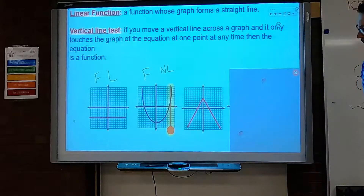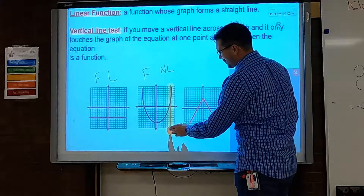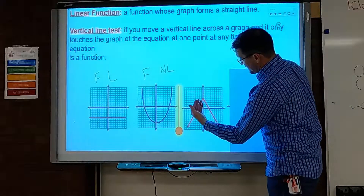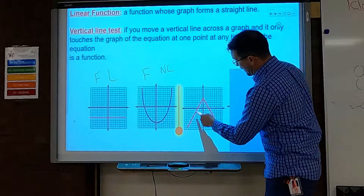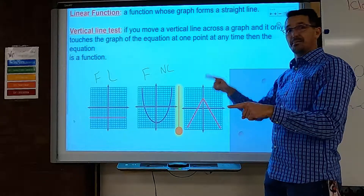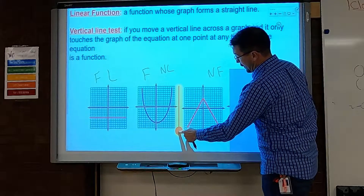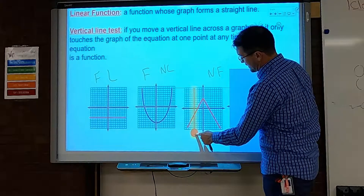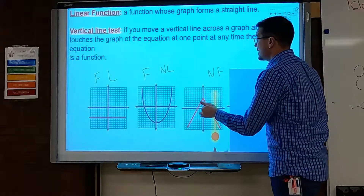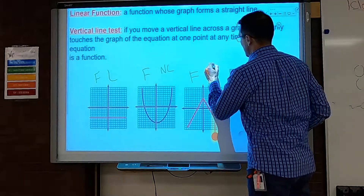This is an upside-down graph of an absolute value equation, which means there's probably a negative sign out front. It's linear from each individual side, but looking at the entire graph, it's not linear because it has a big bend in it. Checking the vertical line test — it doesn't touch the graph at more than one place at any position. So this is a function, just not linear.